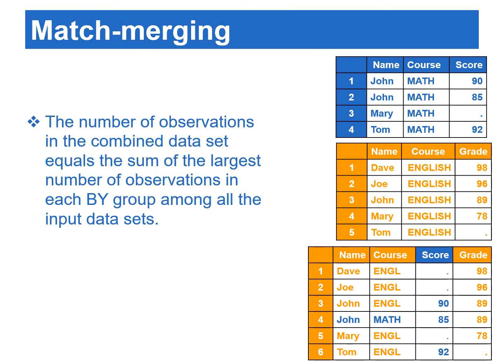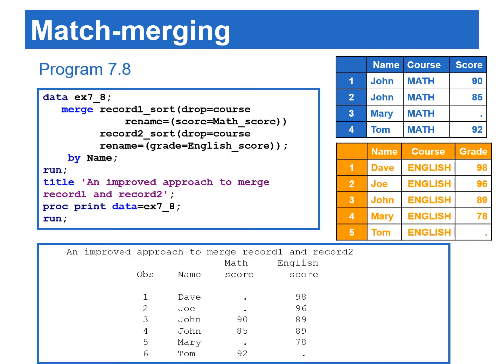The number of records in the final merged data set equals the sum of the largest number of records in each by group among all the input data sets. The previous program was not a logical approach to merge record one and record two, because the course variable does not convey any meaningful information for the combined data set. Program 7.8 is an improved version of program 7.7, utilizing the drop equals and rename equals data set options.